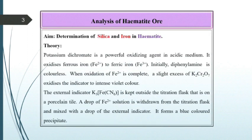Potassium dichromate is a powerful oxidizing agent in acidic medium. It oxidizes ferrous iron to ferric iron. Initially diphenylamine is colorless. When oxidation of Fe2+ is complete, a slight excess of K2Cr2O7 oxidizes the indicator to intense violet color.